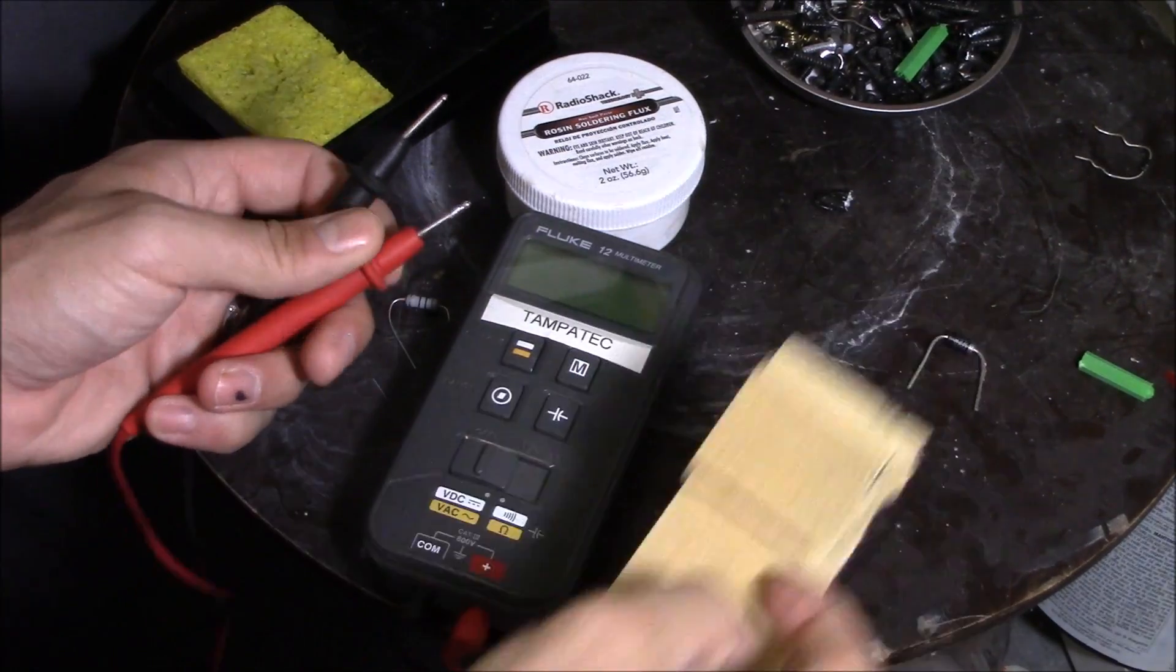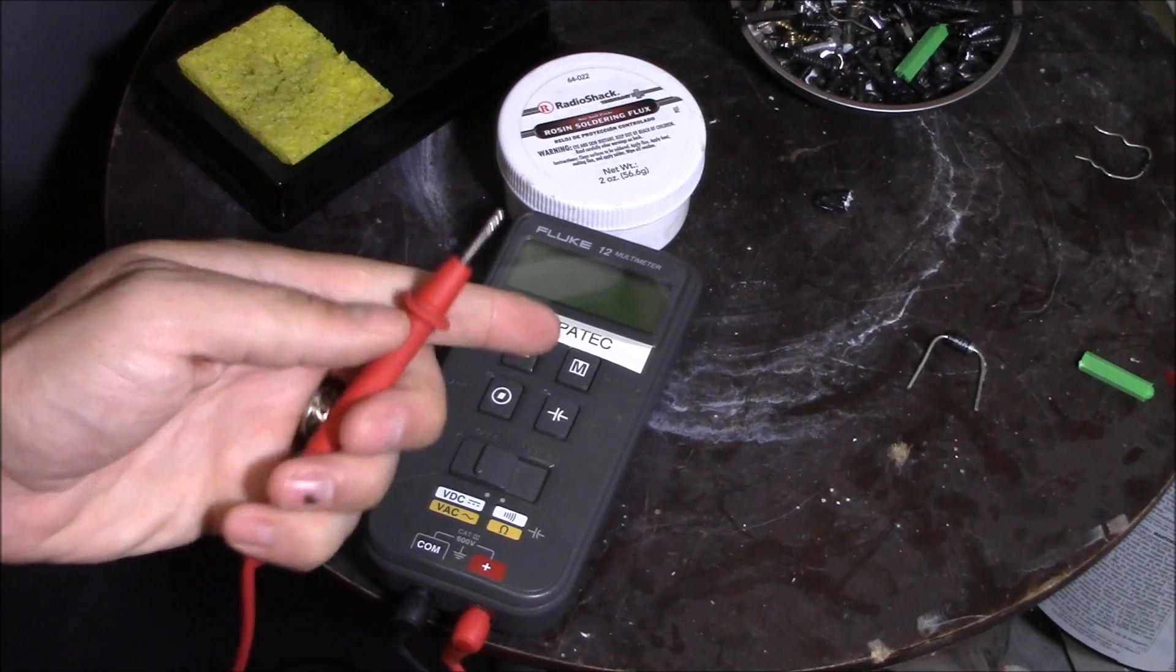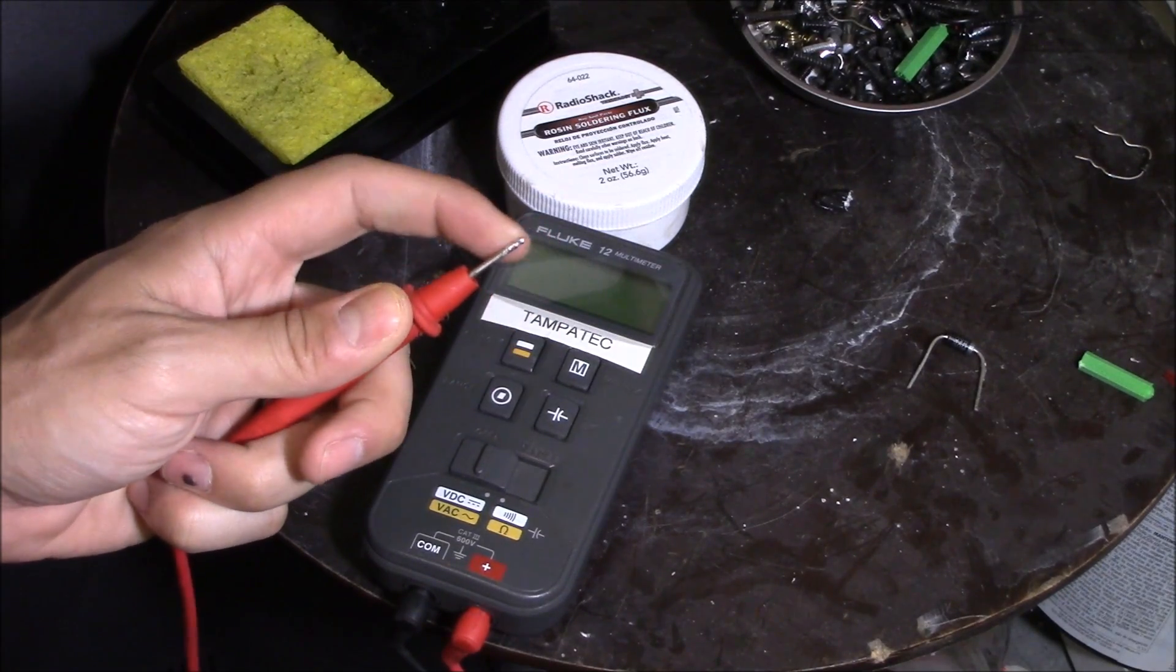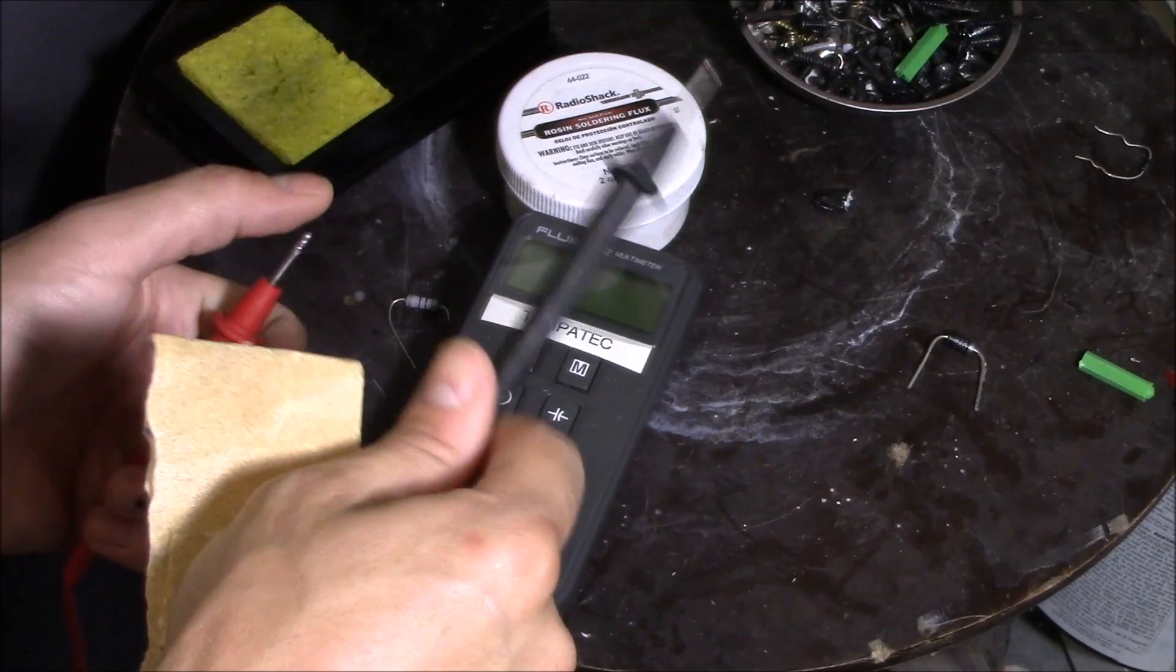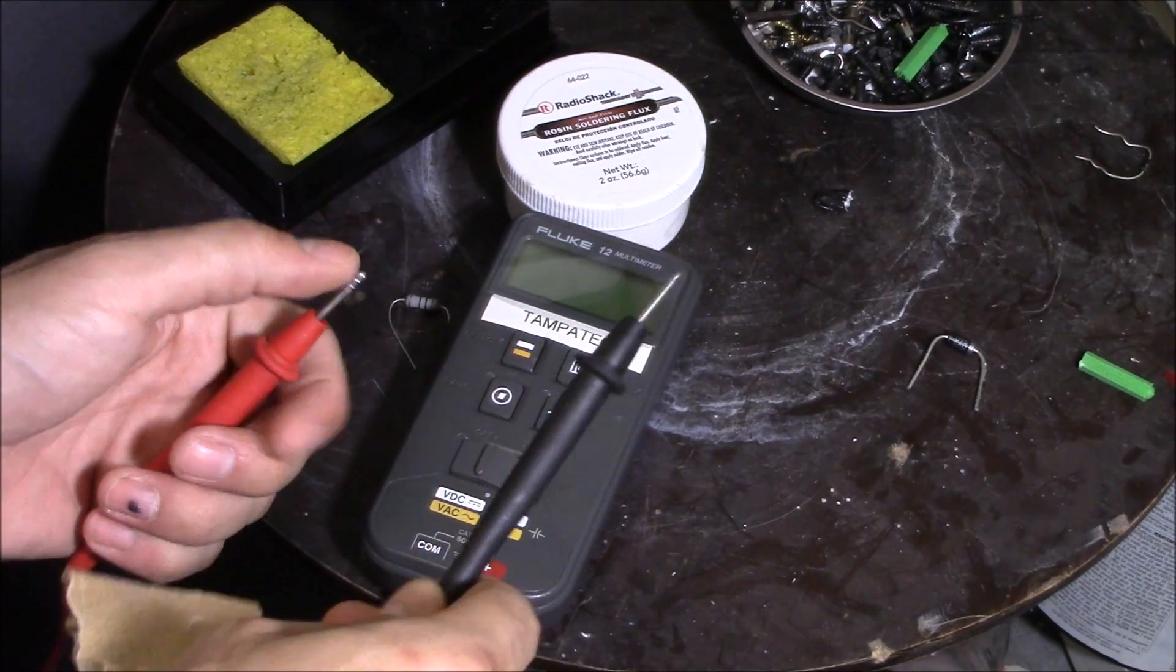I'm going to show you exactly what to do. I'm only going to use my positive probe on my meter because usually I use the negative and put it on the chassis of the TV or a ground source.